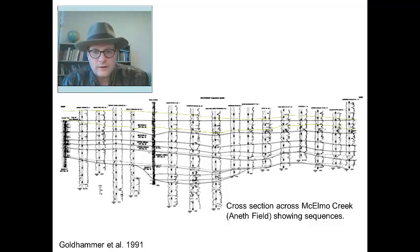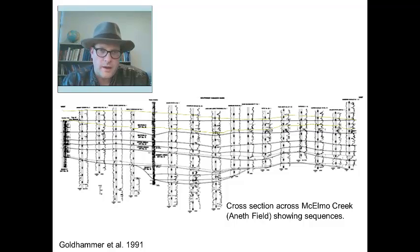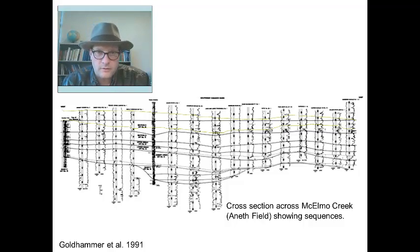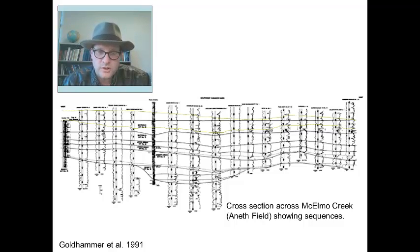This is a cross section across the McElmo Creek and Aneth field that looks like one of our class exercises. It's a sequence stratigraphic interpretation of a number of well logs. You can pick out a couple of features: some maximum flooding surfaces, and some onlapping occurring at the bottom. This is how this reservoir has been compartmentalized, with the source, the reservoir, and the traps developing — all driven by base level and sea level changes that determine which facies occur at which time.